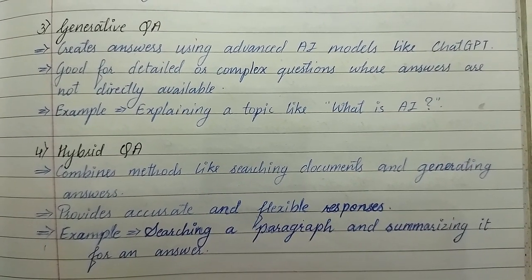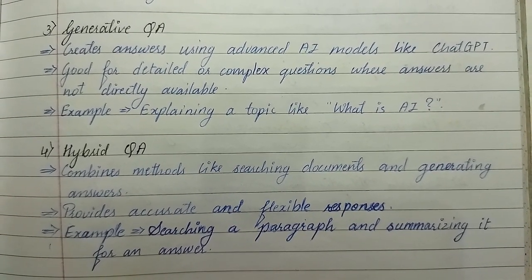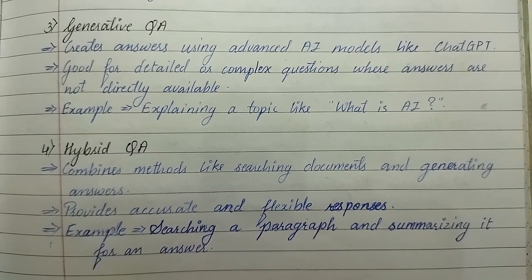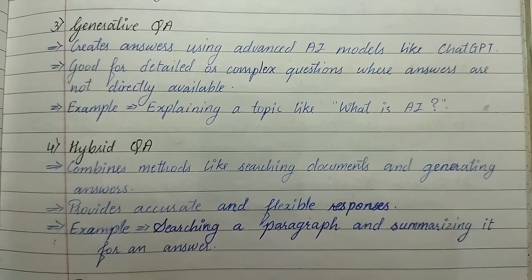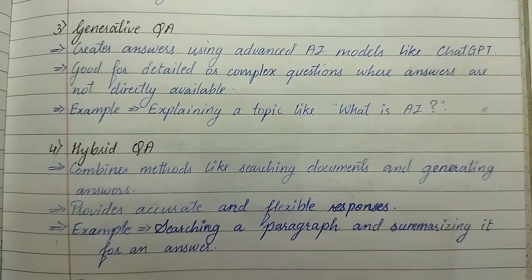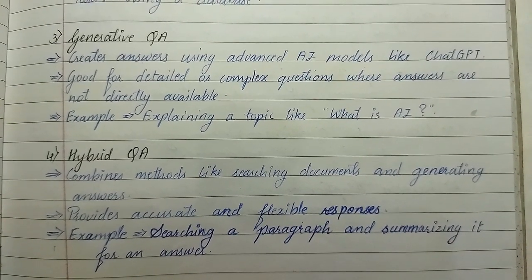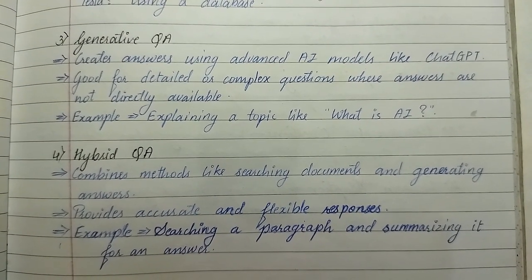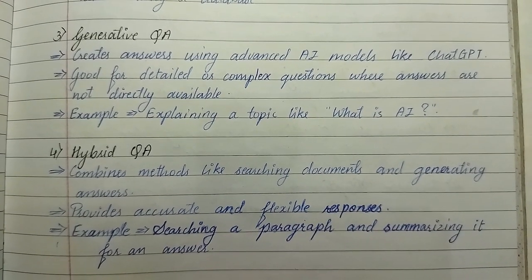Third is generative question answering. It creates answers using advanced AI models like ChatGPT and is good for detailed or complex questions where answers are not directly available. An example is explaining a topic like 'What is AI?' Fourth is hybrid question answering — it combines methods like searching documents and generating answers, providing accurate and flexible responses. An example is searching a paragraph and summarizing it for an answer.